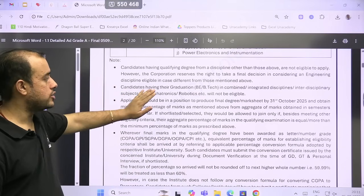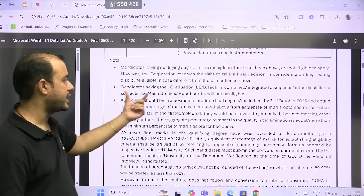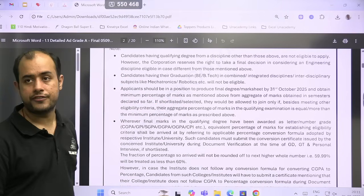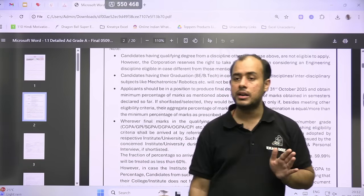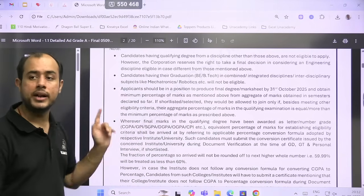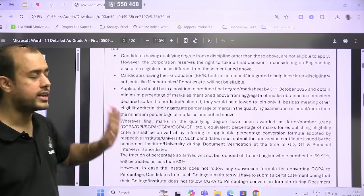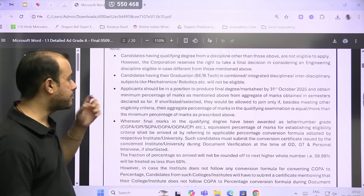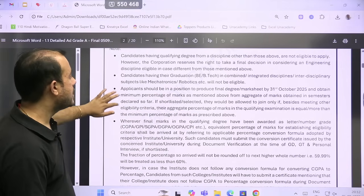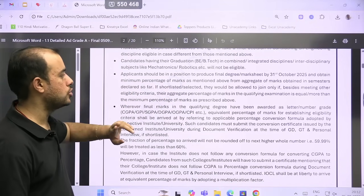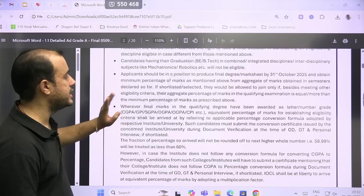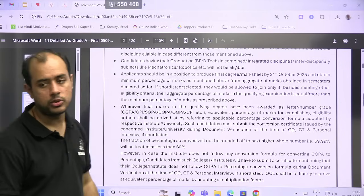Now candidates having graduate in combined integrated or interdisciplinary subjects like mechatronics or robotics are also not eligible. So you must get the final degree by 31st October 2025. This is very important—if you are able to get your final degree by 31st October, that means this recruitment is for 2025 graduates, not for those who are going to graduate in 2026. And obtain minimum percentage marks above the aggregate of marks.